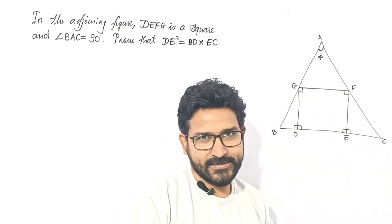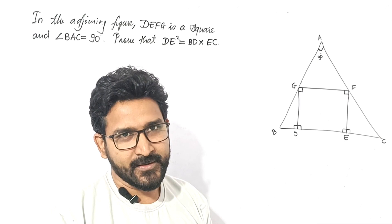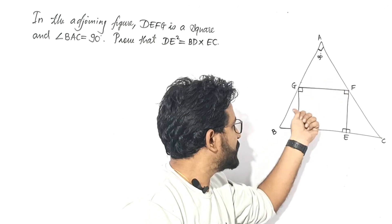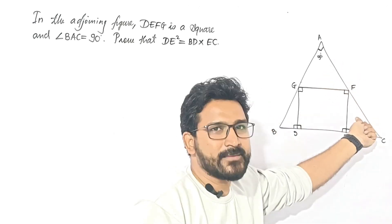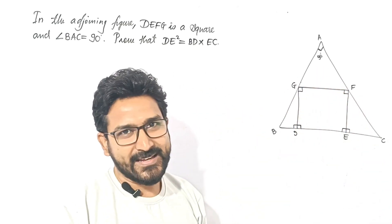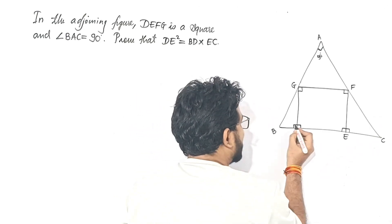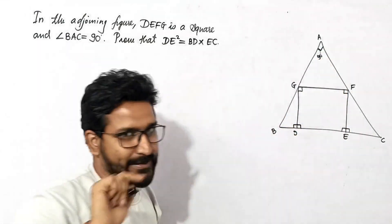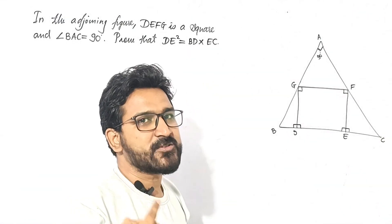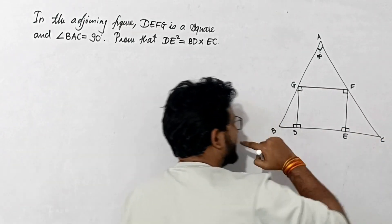Let's see the information available to us which we can directly use. This triangle can be similar to us. If these two triangles are similar, then a third triangle can also be similar. One angle is directly 90 degrees, and here is also 90. Now, GF and DE are the opposite sides of a square. Opposite sides of a square are parallel. So GF and DE are parallel, and GF and BC are also parallel because DE is on the same line as BC.